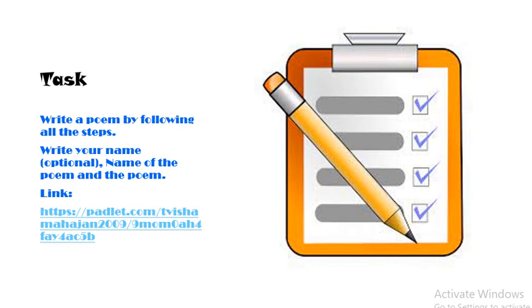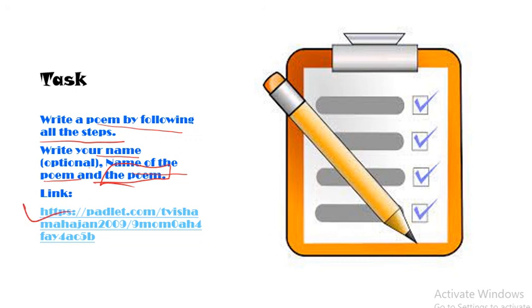Here's a task for everyone — it's a very easy task. I gave an activity in my last video about Japanese but everyone was shy and didn't record any video, so today I have another kind of task. What you need to do is write a poem by following all the steps I have told you. Then write your name — that's optional — then the name/title of the poem, and obviously the whole poem you have written. Here is the link for uploading your poem — you can just type it out on the web browser. I'm going to share this link in the description, so please attempt this activity. Thank you everyone for watching. Hope you like this video. Please like, share and subscribe to my channel. Thank you, have a nice day, and make sure you attempt the activity.